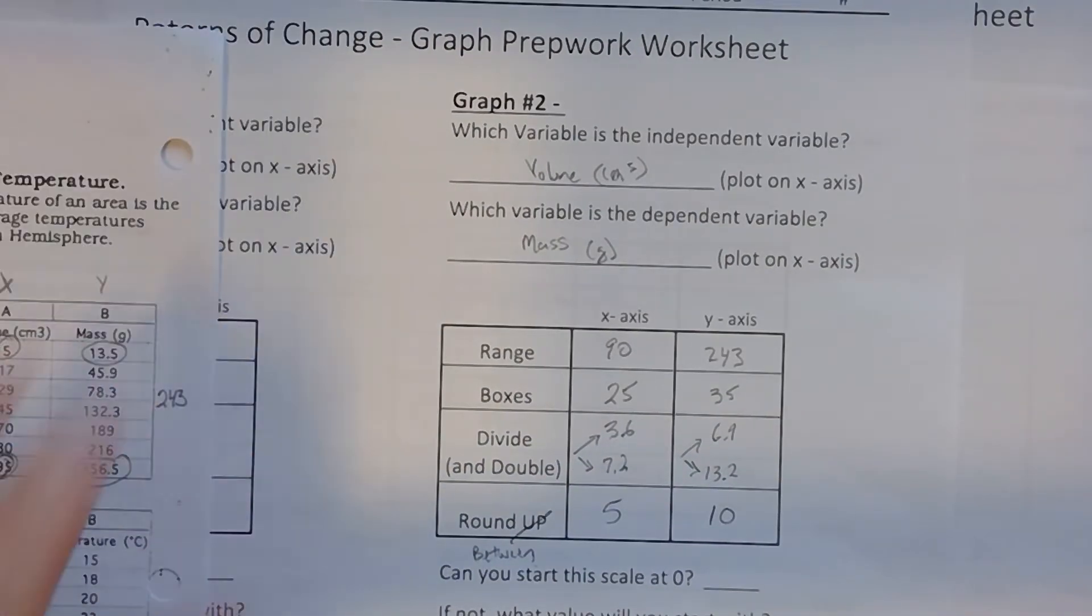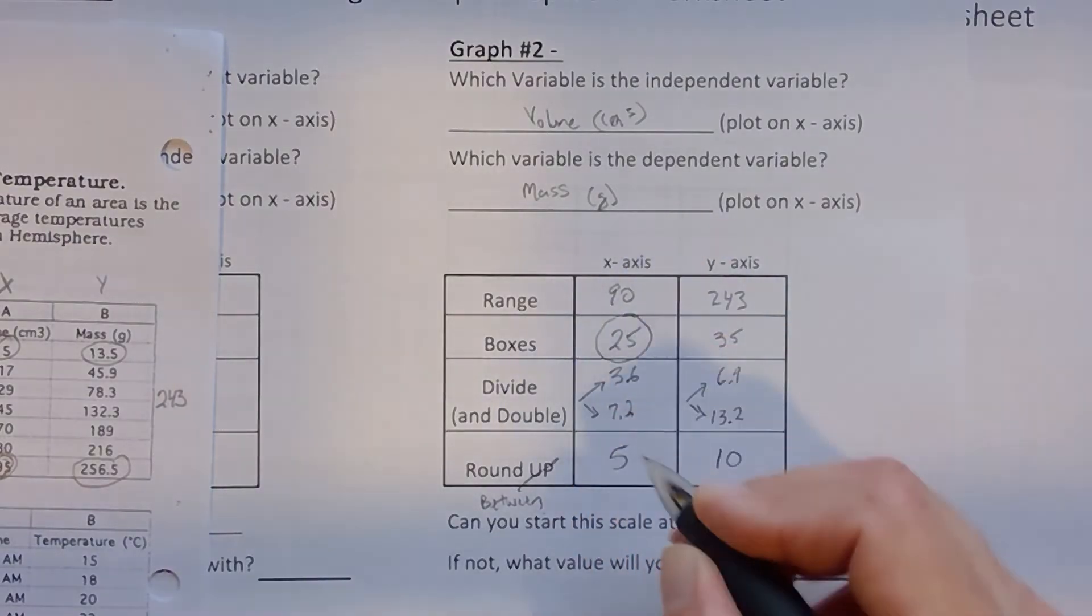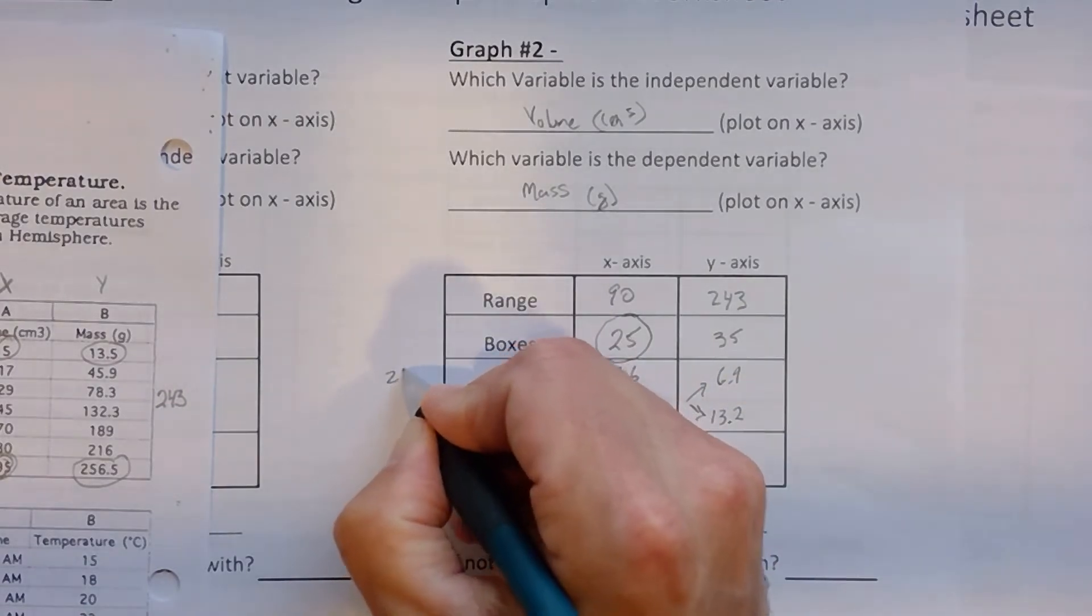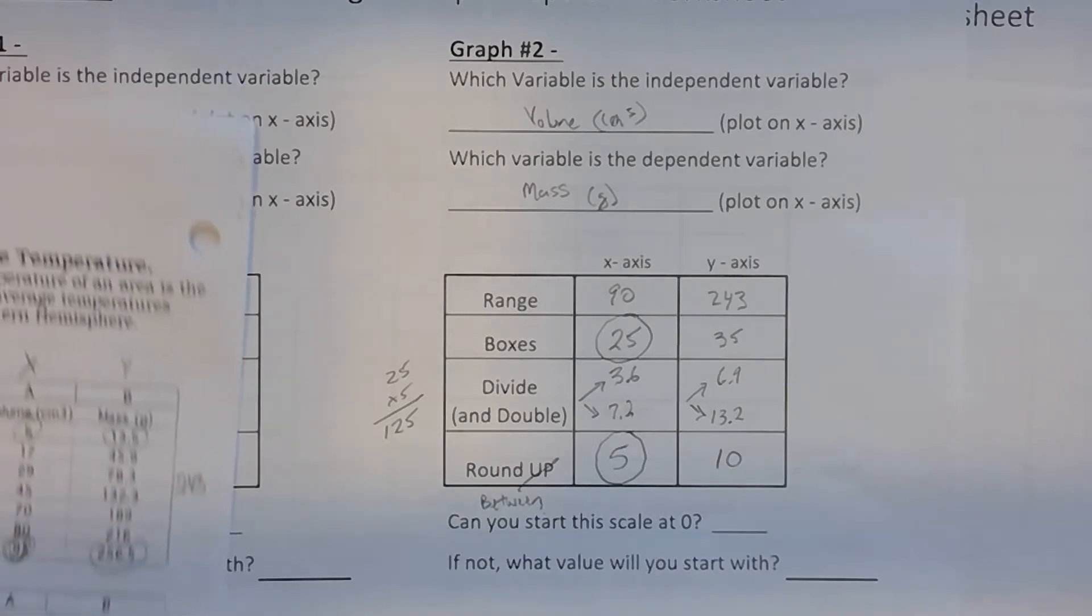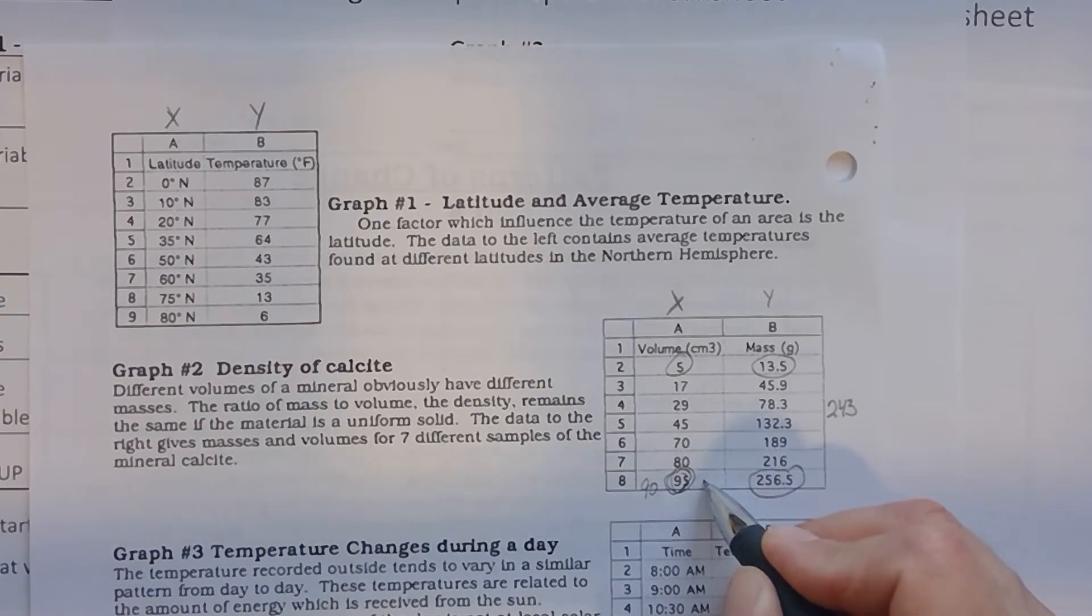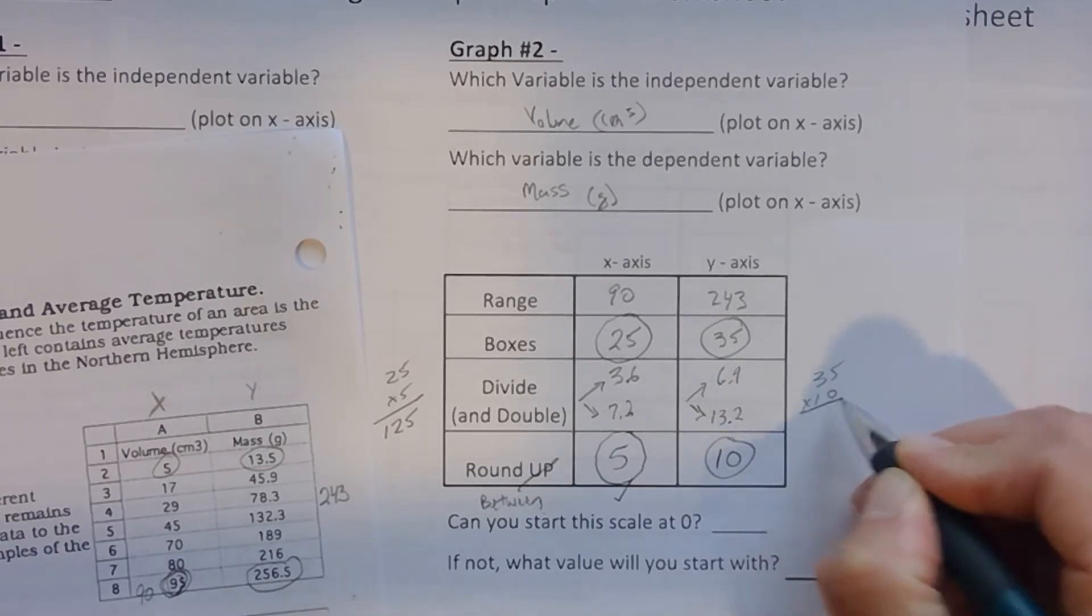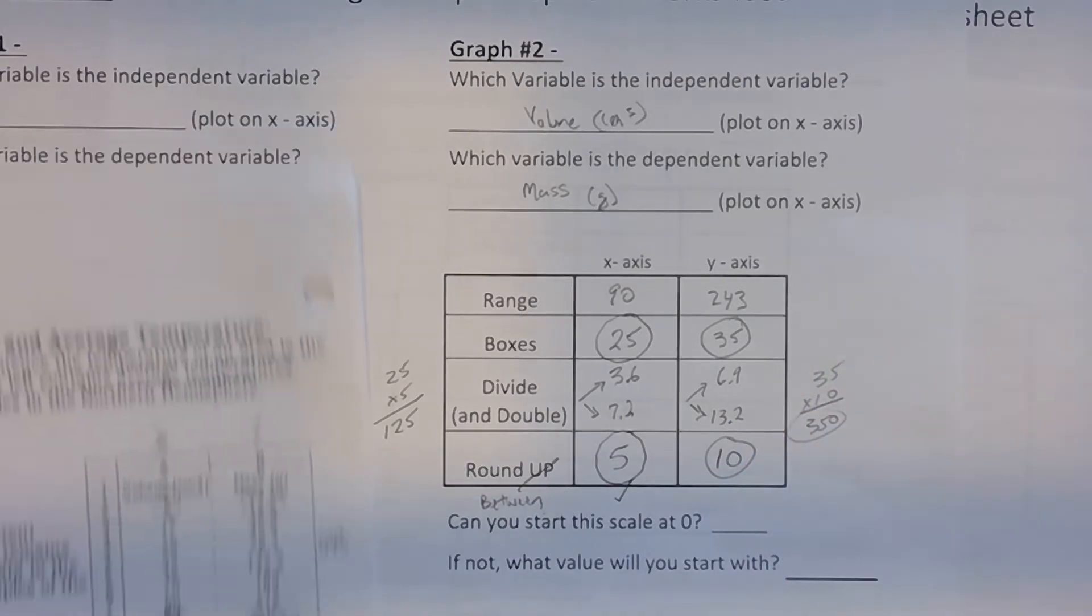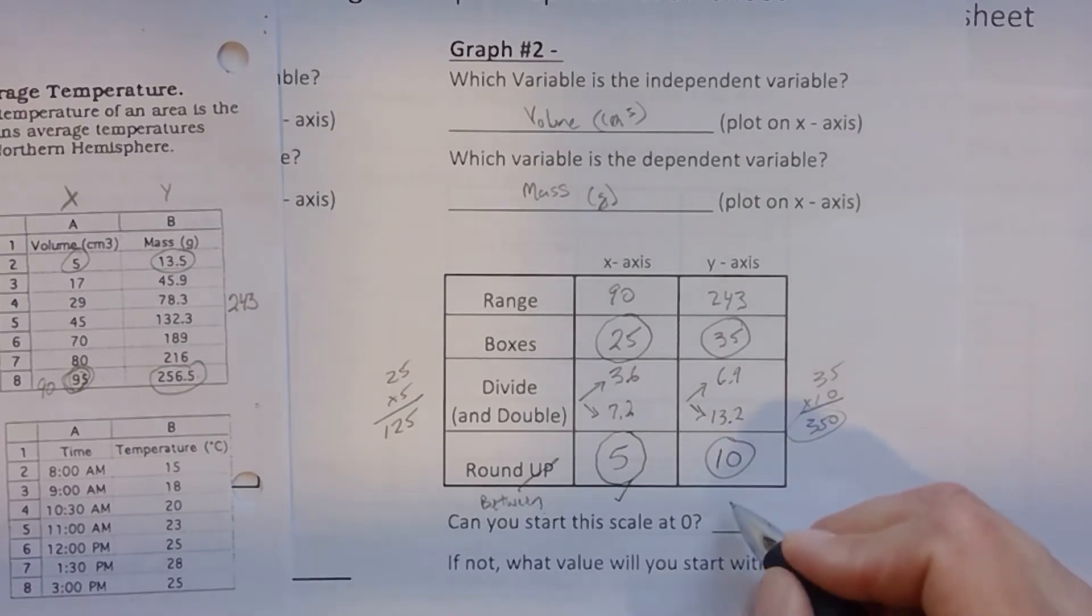Now, you've got to figure out if you can start at 0. And you can start at 0 if the total amount of space is going to get up to your highest number. What I'm doing is I'm going to look at this. I've got 25 boxes. Each box is going to be worth 5. So if I do 25 times 5, that means I could start at 0 and get up to 125. Looking at my data, my data only goes to 95. So this side, I could start at 0. I've got 35 boxes and there's 10 of them. So I have 35 boxes. Each box is worth 10. That's 350. Looking back at my data, my data only goes up to 256. It's going to work. I can start at 0. So I'm going to put a check at 0. Can you start the scale at 0? Yeah.